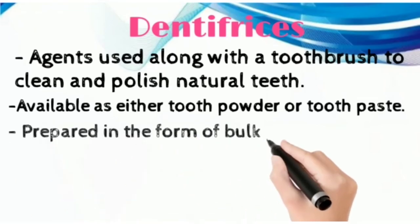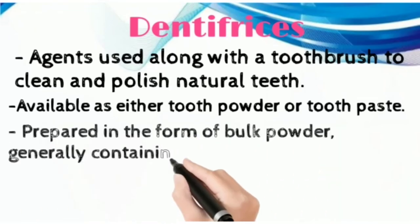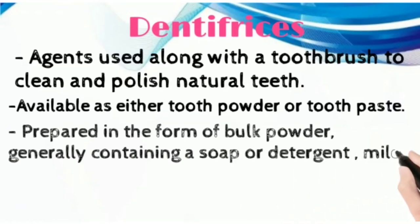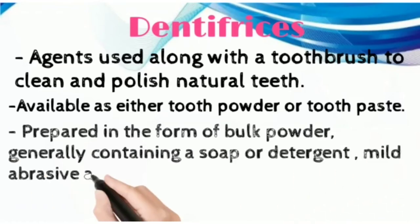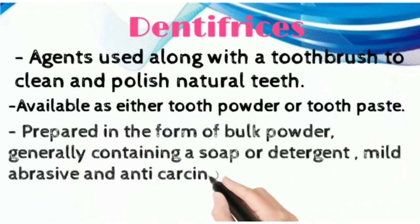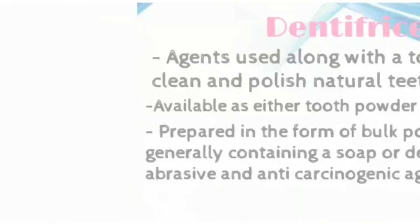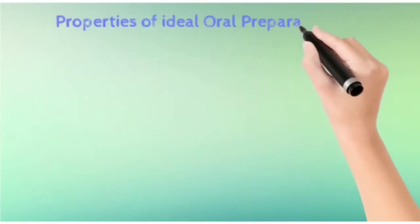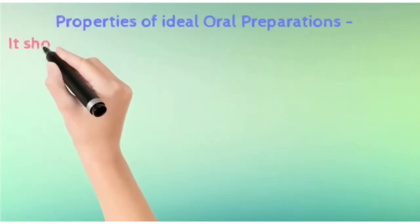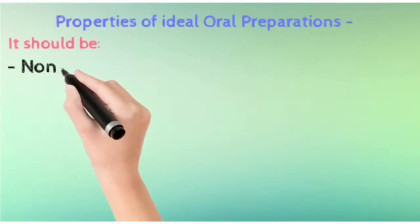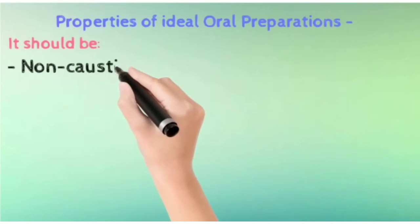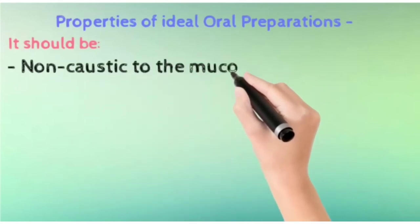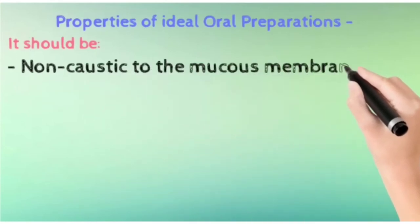Dentifrices are prepared in bulk powder form, generally containing a soap or detergent, mild abrasive, and any anti-cariogenic agent. What are the ideal properties for any oral preparation? It should be non-toxic, non-caustic, and non-decalcifying.